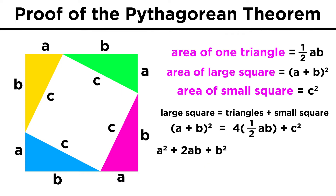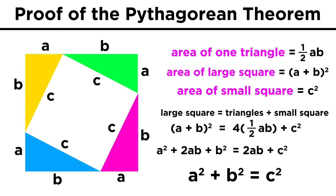On the right, we can multiply four and one-half, and we get two AB plus C squared. As it happens, we have two AB on both sides, so those will cancel out. And wouldn't you know it, take a look at what we are left with — the Pythagorean Theorem.